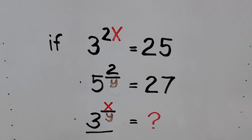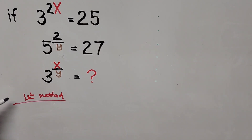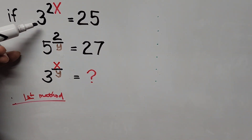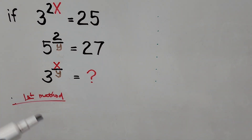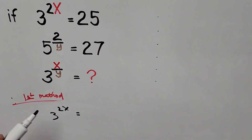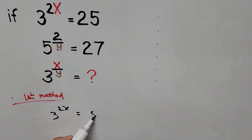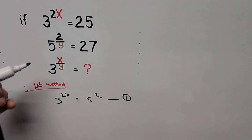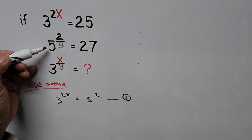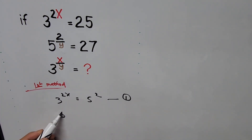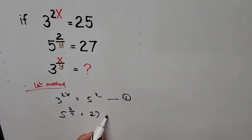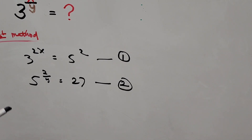For the first method we'll be using substitution. The equation 3 to the power of 2x equals 25 can be written the same way as 5 squared, and we label this as equation 1. The second equation, 5 to the power of 2 divided by y equals 27, we label as equation 2.